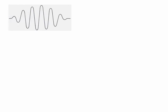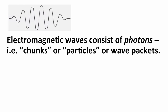Electromagnetic waves consist of what are called photons, which we can think of as chunks or particles of electromagnetic radiation, often called wave packets. A wave packet is a discrete number of cycles of the wave — it has a start and a finish. Here is a representation of a photon of red light and a photon of purple light. The red light photon has a longer wavelength, meaning lower frequency, while the purple light photon has a shorter wavelength and higher frequency.